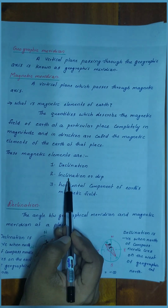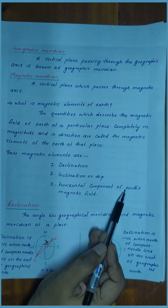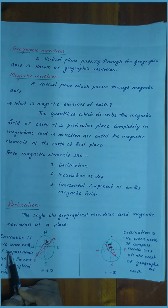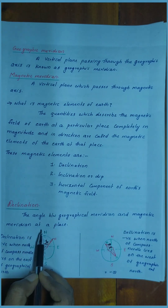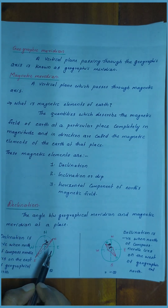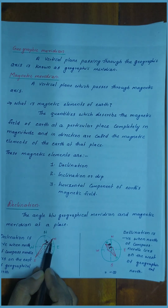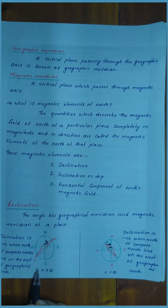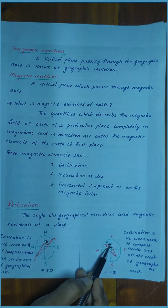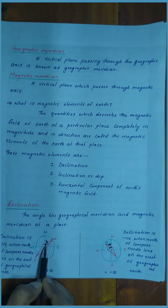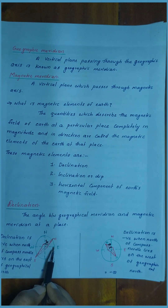The three magnetic elements are: first, declination; second, inclination or dip; and third, the horizontal component of the earth's magnetic field. Declination is the angle between the geographical meridian and the magnetic meridian at a place. Declination is positive when the north of the compass needle lies on the east of geographical north.